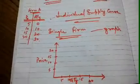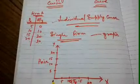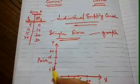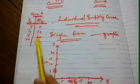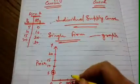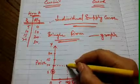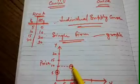We are expressing quantity on the x-axis and price on the y-axis. When the price was rupees 5, the quantity was 0, so we are standing at this point. When the price rose to rupees 10, the firm was willing to sell 10 units in the market — so we are standing here at price 10 and quantity 10 units.